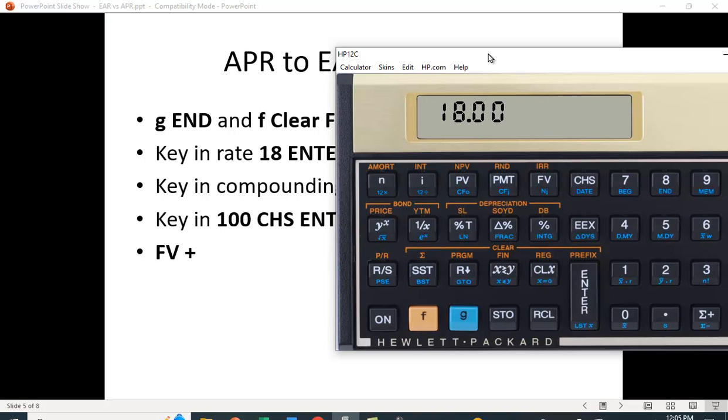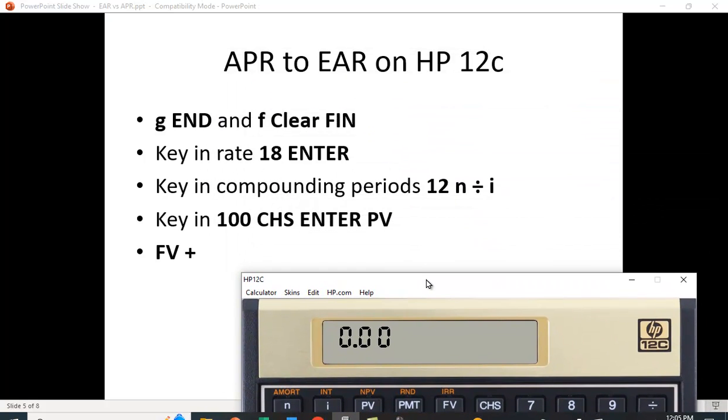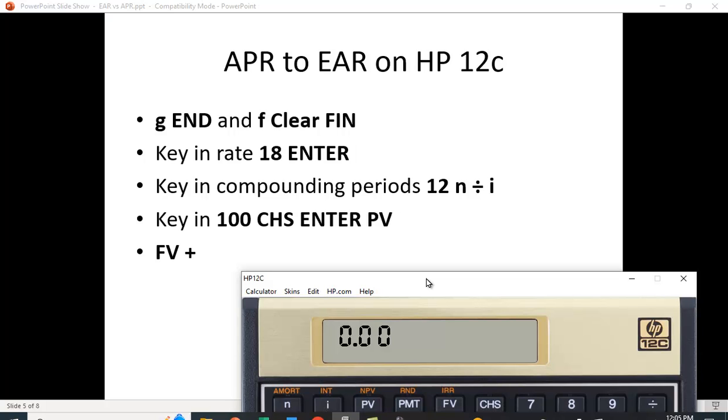I need to turn my calculator on, so let me do that again. So G END and then the function here clear that, so I've cleared all the financial functions. What are we going to do here? We're going to enter the rate. We're going to put in 18 and hit ENTER, and then we're going to hit 12 and store that in N and say divided by. So we're taking the 18% and dividing it by 12, and then that's going to give us the 1.5%, hopefully, and we'll store it as I. Then we're going to key in 100, change the sign, ENTER, and we're going to hit PV, FV, and plus.